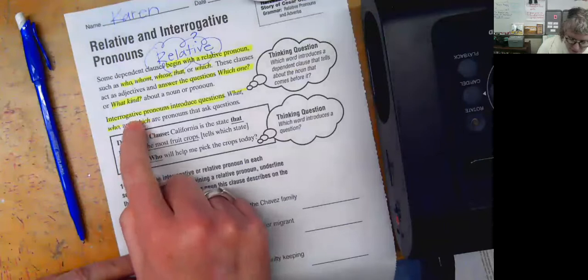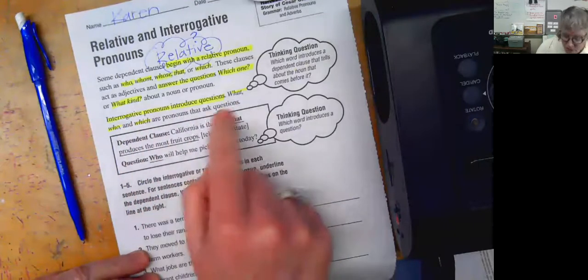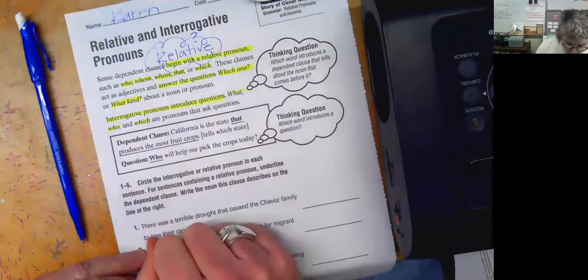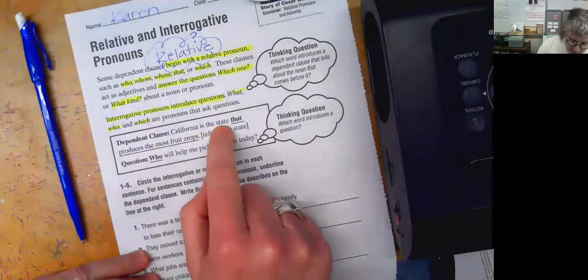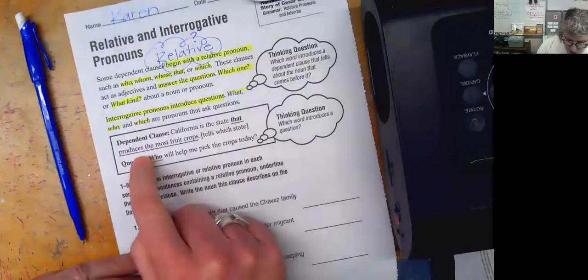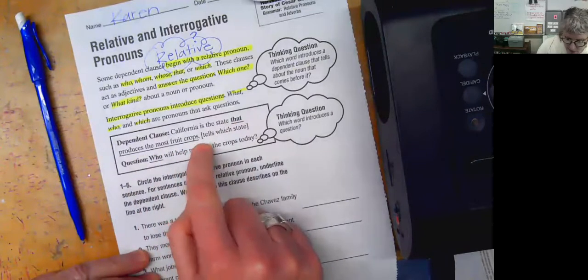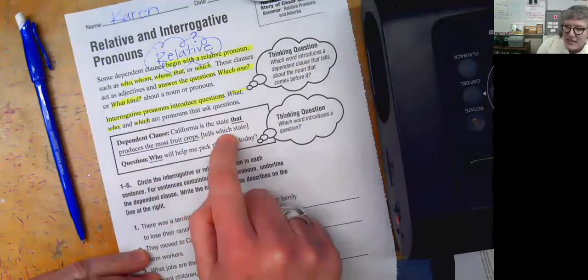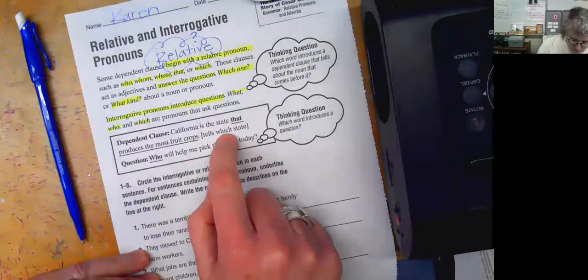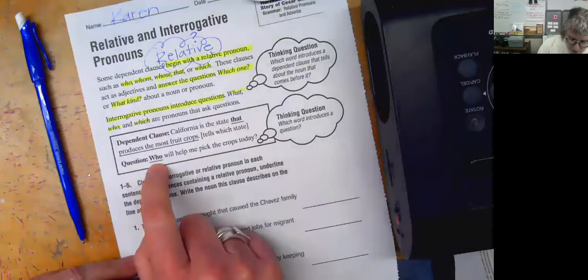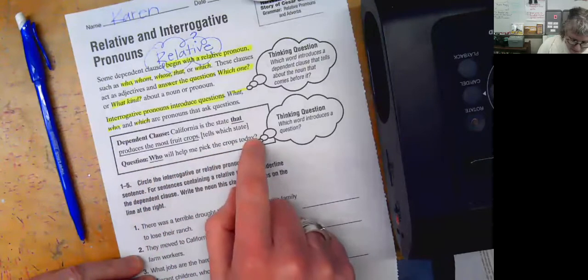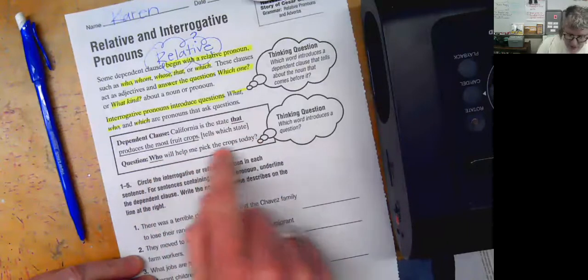So these ask a question, they pose a question. So for example, here's a dependent clause: California is the state that produces the most fruit crops. So this tells which state, and this is a relative pronoun. This is one that is a dependent clause that is a question, right? Who will help me pick the crops today? So again, it's forming a question.